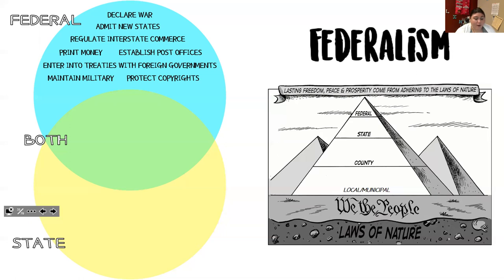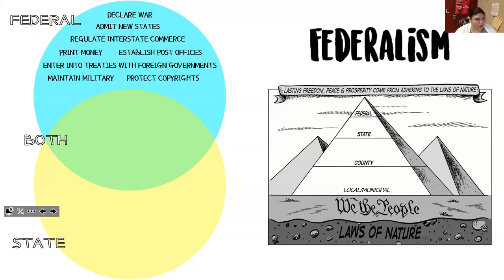The federal government can establish post offices — mail is a federal department. They can also enter into treaties with foreign governments; Texas cannot go to Mexico and set up a private treaty, as that goes against the Constitution. We are one country and we need to benefit all. The federal government also maintains the military and protects copyrights. The most important ones to write down are: declaring war, admitting new states, printing money, regulate interstate commerce, and maintain military.